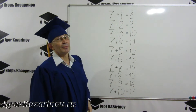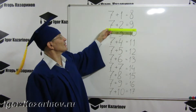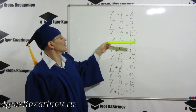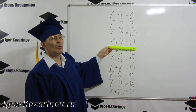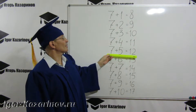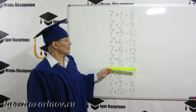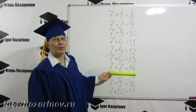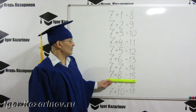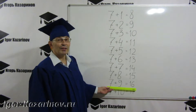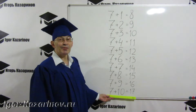This is the table for 7. 7 plus 1 equals 8. 7 plus 2 equals 9. 7 plus 3 equals 10. 7 plus 4 equals 11. 7 plus 5 equals 12. 7 plus 6 equals 13. 7 plus 7 equals 14. 7 plus 8 equals 15. 7 plus 9 equals 16. 7 plus 10 equals 17.